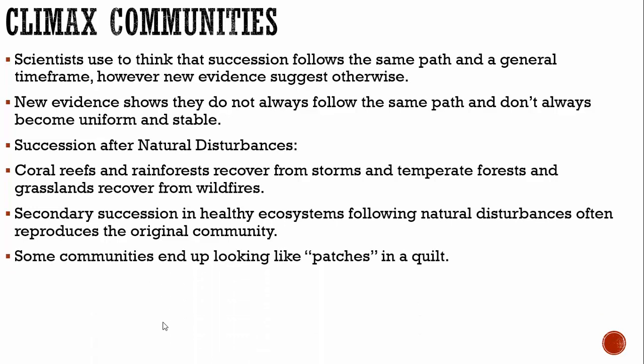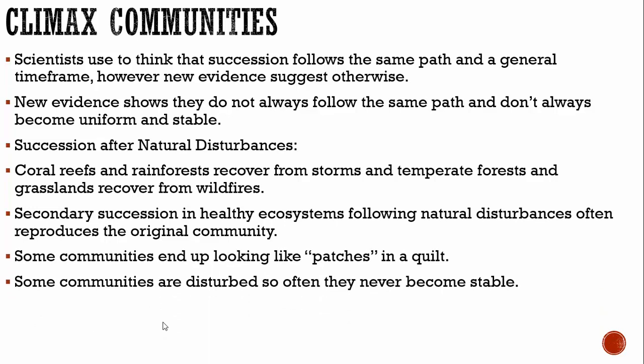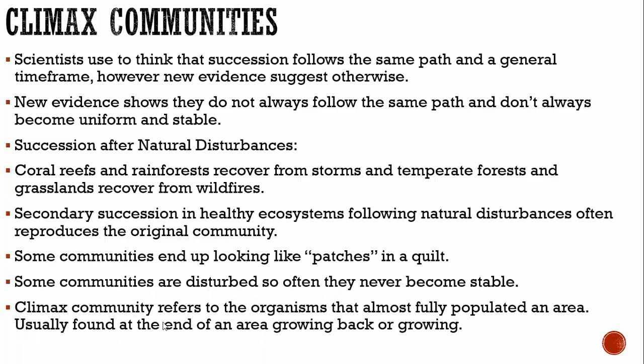Some communities end up looking like patches in a quilt. Some communities are disturbed so often they never become stable. A climax community refers to the organisms that almost fully populated an area — it's usually found at the end of an area growing back, or one that is growing for the first time.